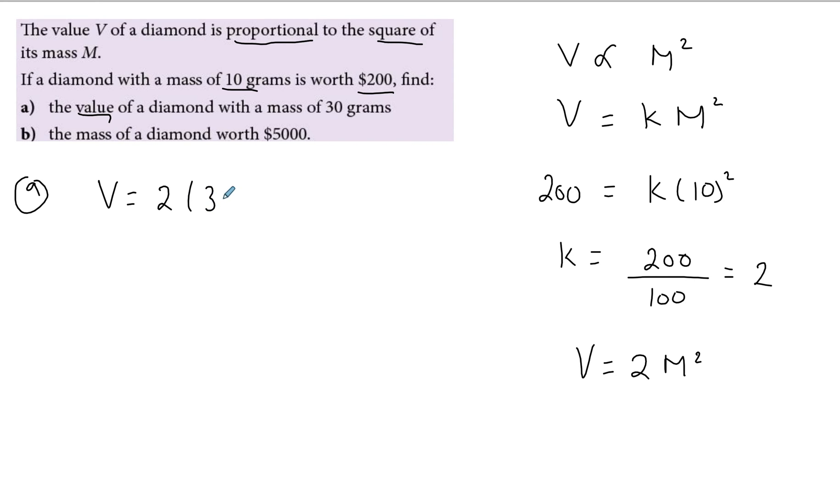So I need to find the value, so I need to find V if the mass is 30. So V is equal to 2 times 30 squared, and that will just give me 1800.